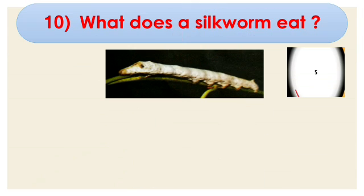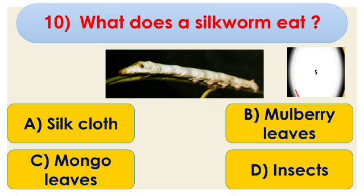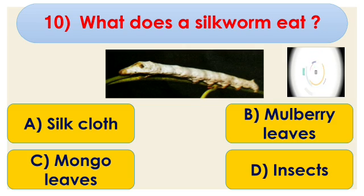Question number 10: what does a silkworm eat? A silkworm is shown in the picture. Options are A. Silk cloth, B. Mulberry leaves, C. Mango leaves, and D. Insects. Time is over — silkworm eats option B, Mulberry leaves. That is the correct answer.